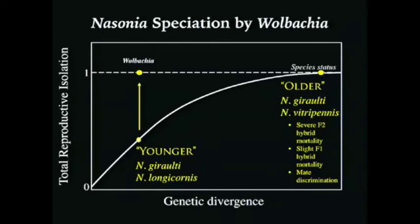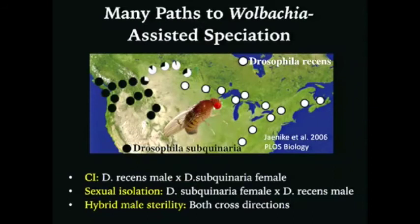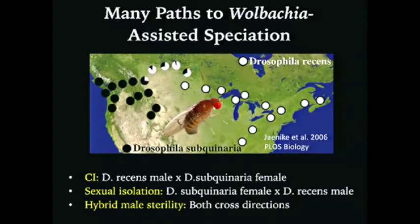John Jaenike's lab has also done great work in mushroom-feeding Drosophila, showing that species of subquinaria and recens meet in a hybrid zone where cytoplasmic incompatibility in one way, coupled with sexual isolation in the other way, plus hybrid male sterility, brings down gene flow. Wolbachia are common in arthropods and have the ability to drive reproductive isolation events, sometimes rapidly. Critics say it's just one microbe and only in arthropods — not a universal mechanism. But there are many different ways to make a species, which motivated us to go to the gut microbiome as a more general proxy for studying speciation by symbiosis.